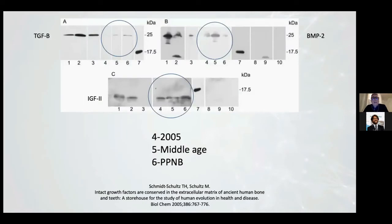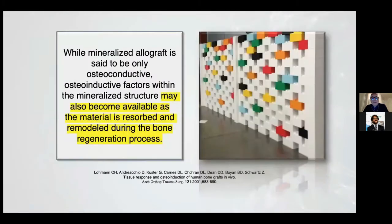The surprise is the data: after thousands of years, it's possible to find the same quantity of proteins inside the tooth. This result is possible because we can manage the dentin like a wall — every white brick is HA and the colored bricks are the proteins. The HA is the tissue in nature and is able to protect the protein.